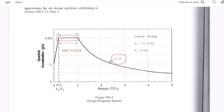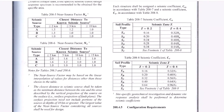CA and CB values can be obtained from Tables 208-7 and 208-8 respectively in the NSCP code. CA is a function of seismic zone factor NA, while CB is a function of NB, and both are near-source factor dependent.